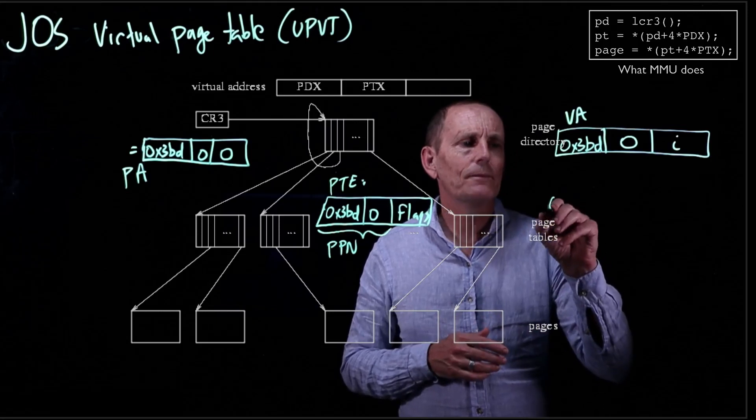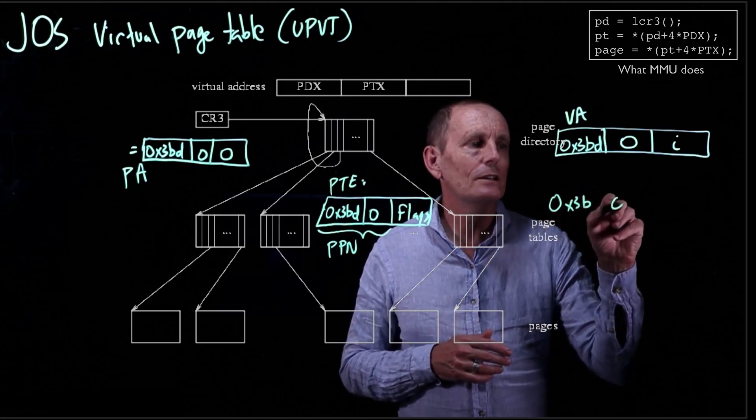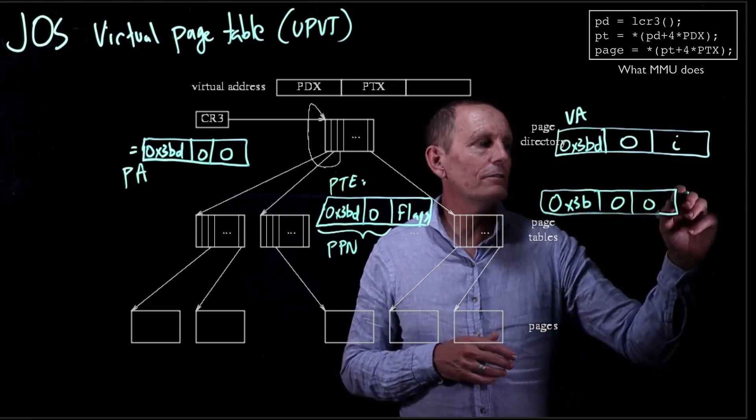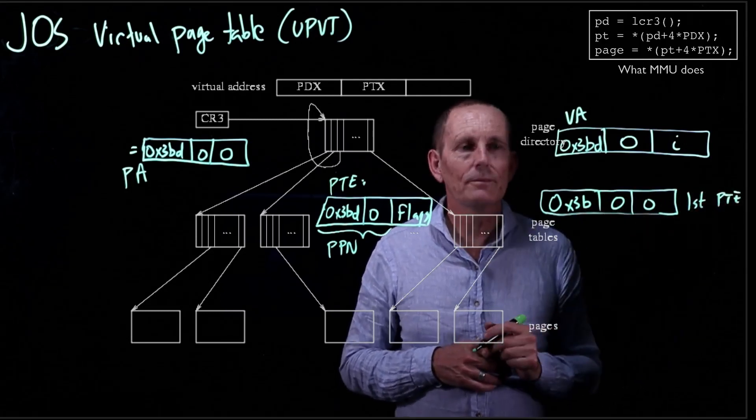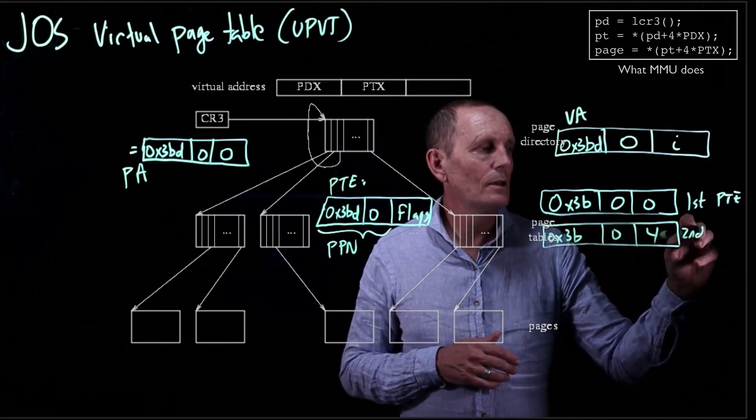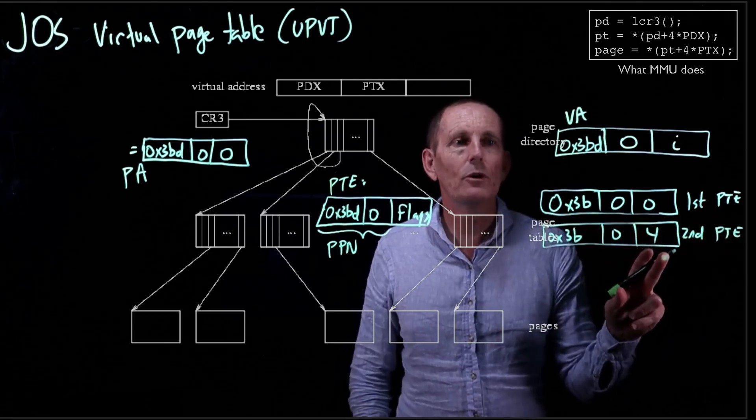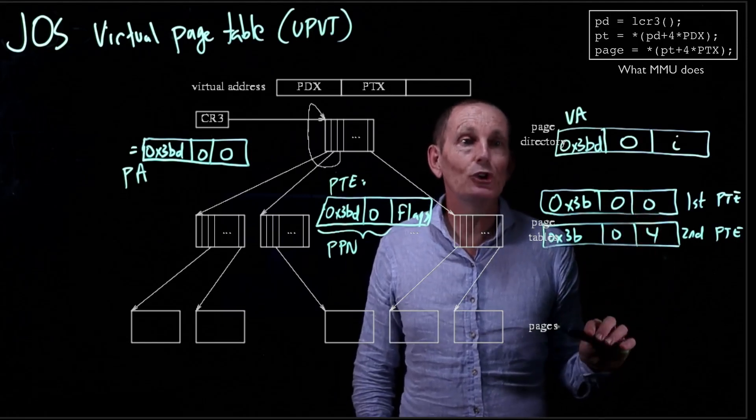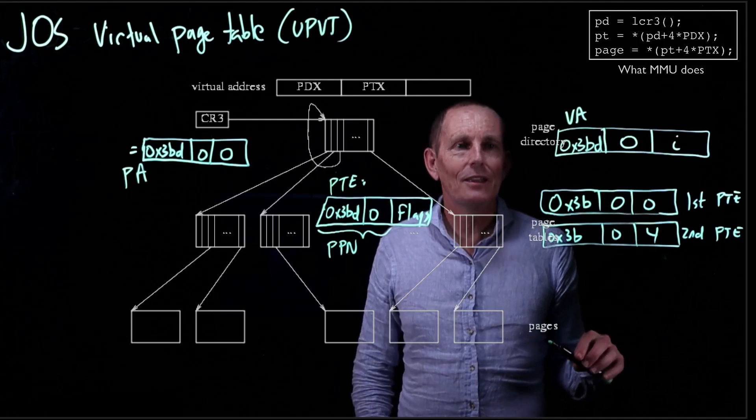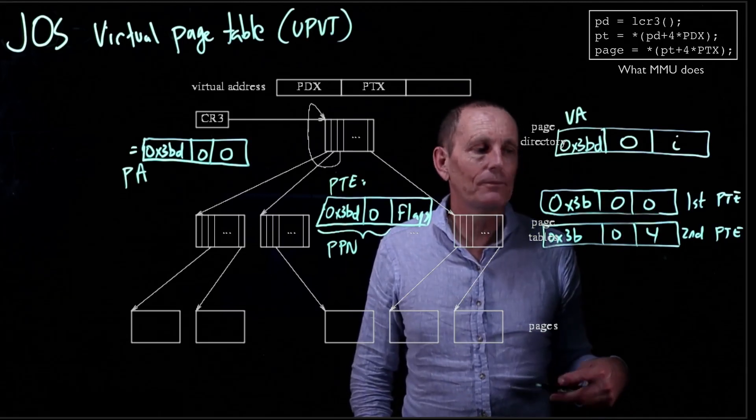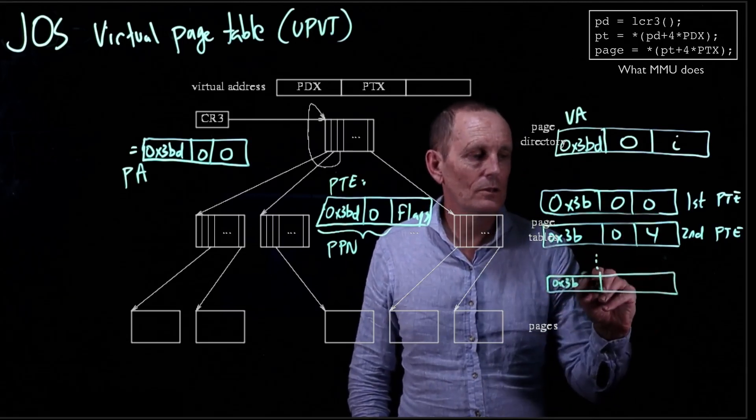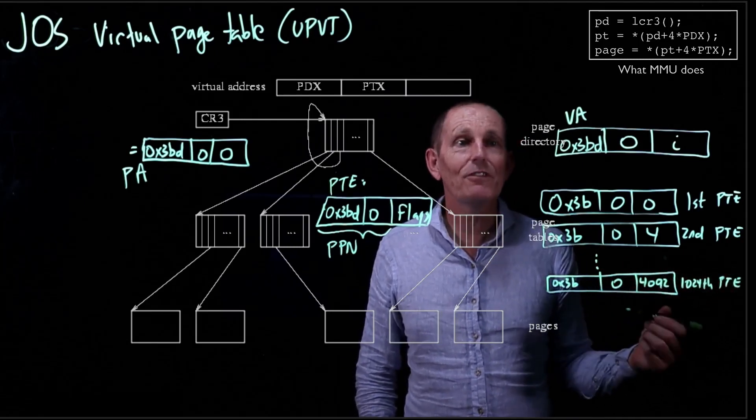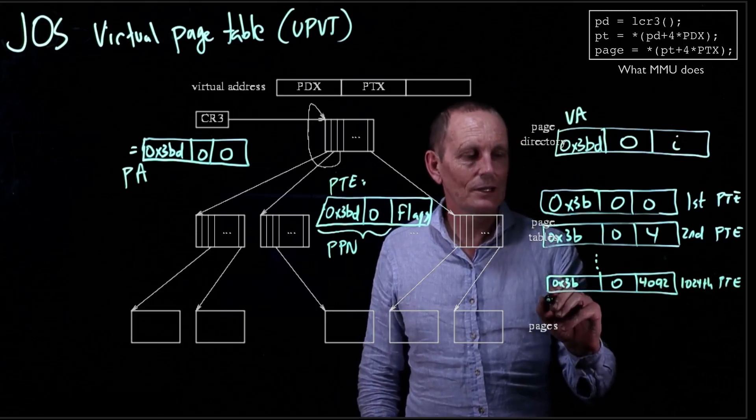So that means 0x3BD, 0, this is the first page table entry. If you use an offset of 4, that's the second page table entry. And if we go all the way to 4092, that will be the 1024th page entry. Now the question is, what's the 1025th page table entry? Well, let's look.